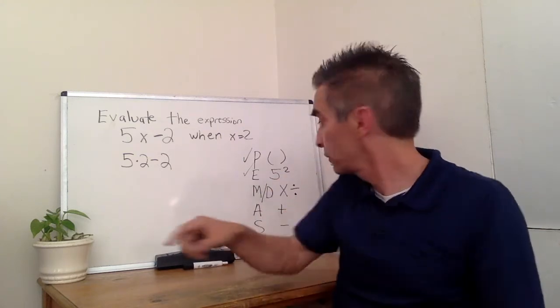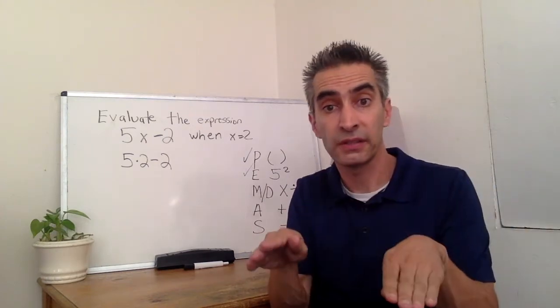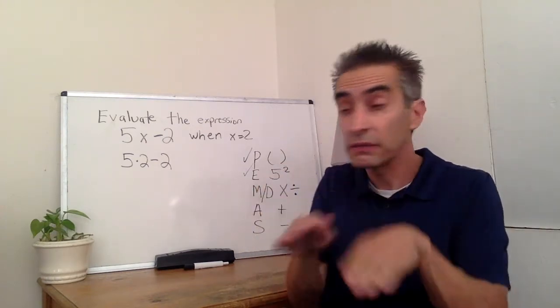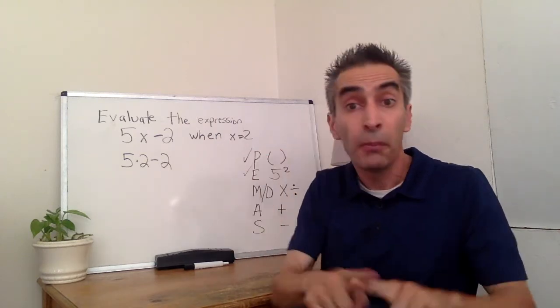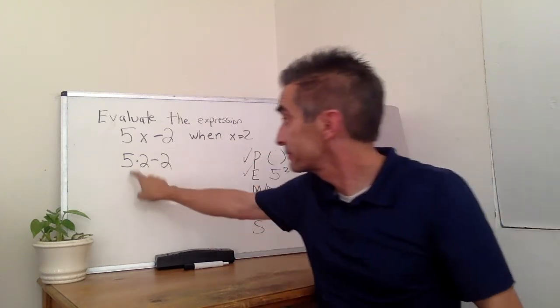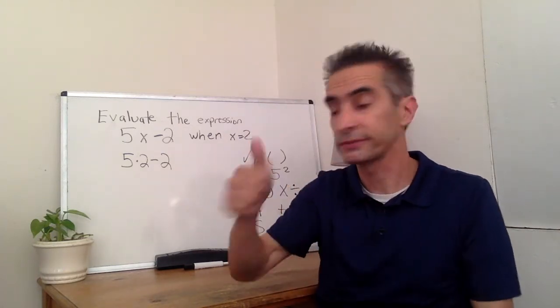Next, what are we going to do? Multiplication and division. Can you see any multiplication or division? Can't see any division, but multiplication, yes. 5 times 2 equals 10.